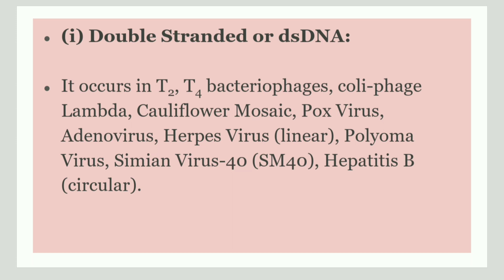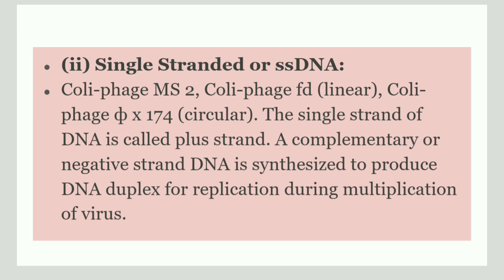Next is single-stranded DNA, or ssDNA. Examples of ssDNA are phage MS2 and phage FD, and these are either linear or circular DNAs. A single-strand DNA is called a plus strand, and the complementary or negative strand is synthesized to produce the duplex.